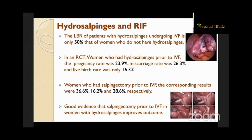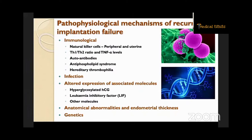The pathophysiological mechanisms of recurrent implantation failure include immunological factors, infectious causes, altered expression of associated molecules, anatomical abnormalities, endometrial thickness, and genetics. Immunological causes include natural killer cells — both peripheral and uterine — alteration in the TH1/TH2 ratio, TNF-alpha levels, autoantibodies, anti-phospholipid syndrome, and hereditary thrombophilias. The immune system is a collection of cells, tissues, and molecules that protects the body from pathogenic microbes and toxins. It is divided into innate immune response, which is more aggressive and does not have memory, and the adaptive immune response.